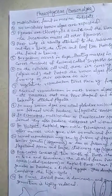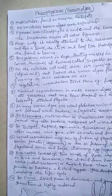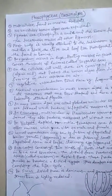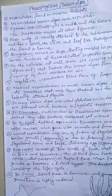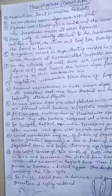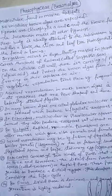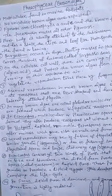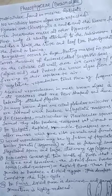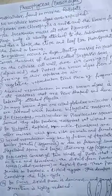Brown algae are called so because they contain many pigments like chlorophyll A and C, and the brown fucoxanthin pigment. These fucoxanthin pigments mask the other pigments, so due to the predominance of fucoxanthin, they appear brown in color.